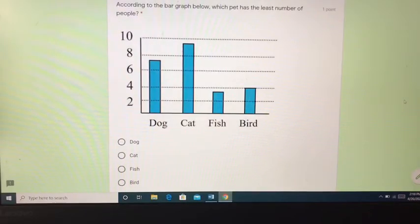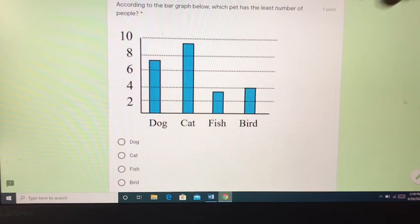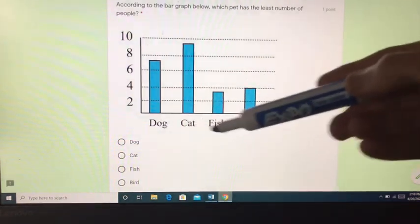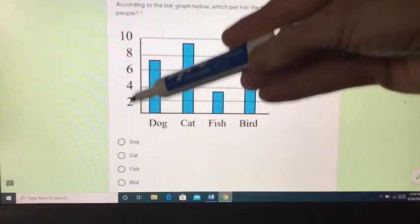The next problem says, according to the bar graph below, which pet has the least number of people? So you're looking at that keyword least number of people. All I see are dog, cat, fish, and bird. And then I see our numbers on the side.